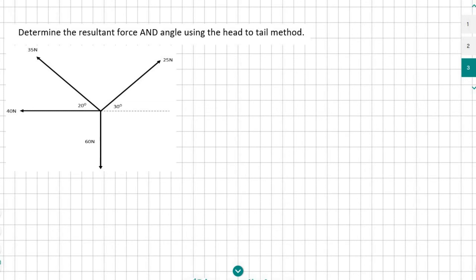We have to work out the resultant force and angle using the head-to-tail method. What you need to identify here is that these forces are fairly big. So what you don't want to do is use a one-to-one scale because you can't draw a 60 centimeter long line. It's not going to fit on a normal piece of paper.